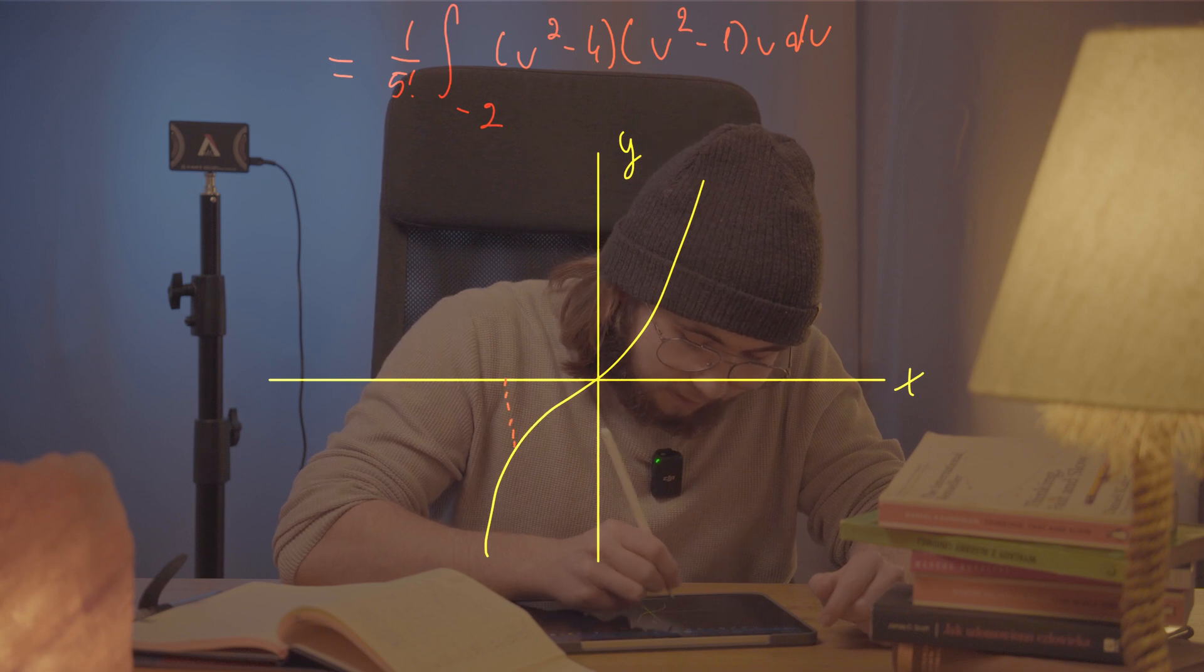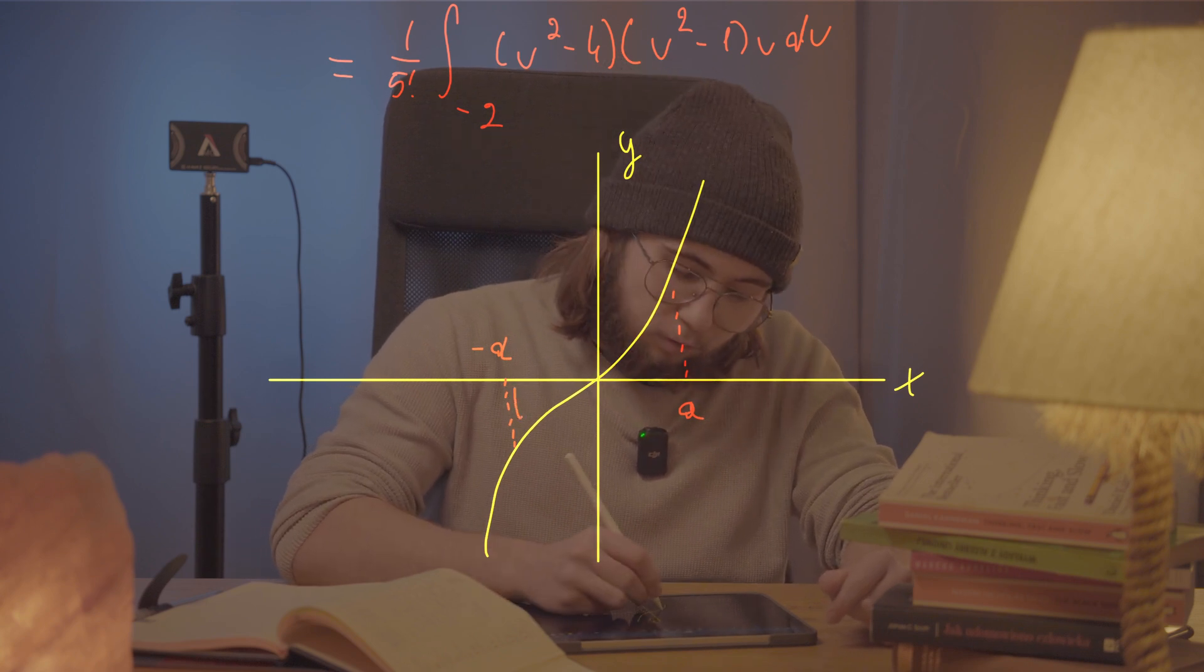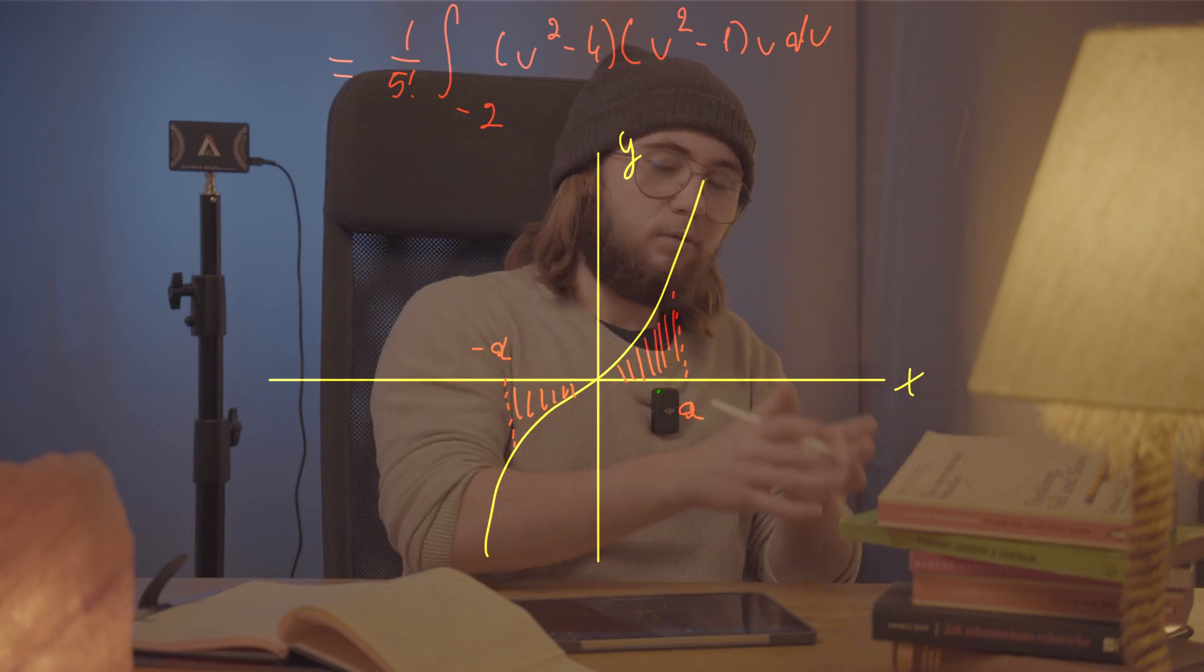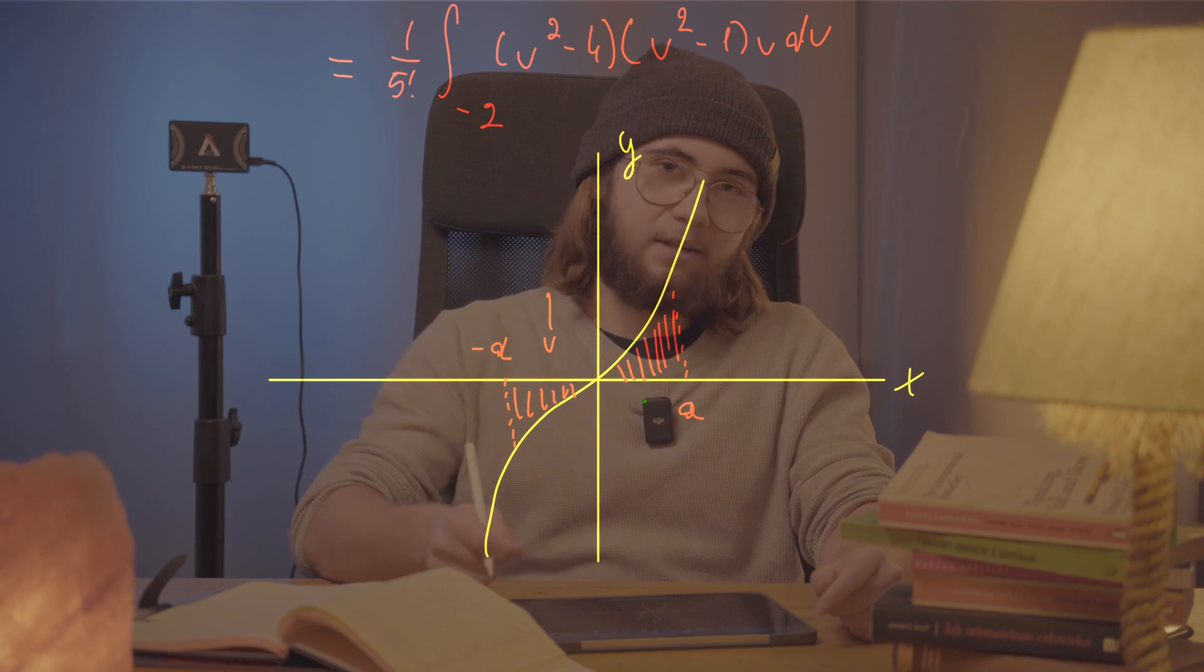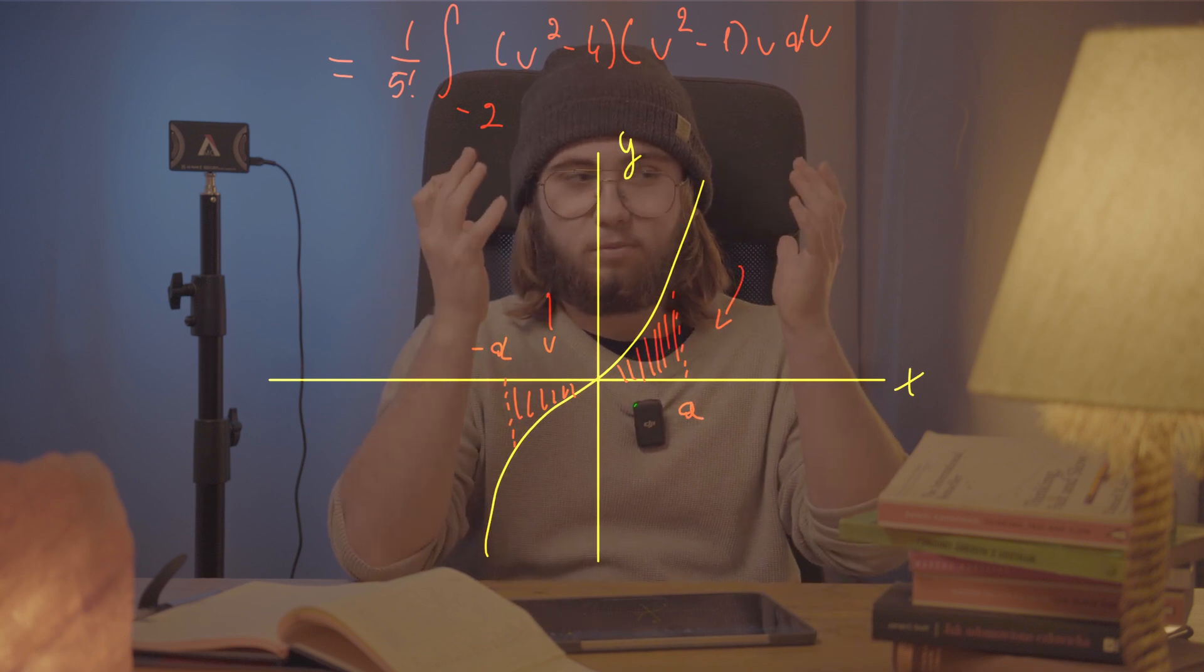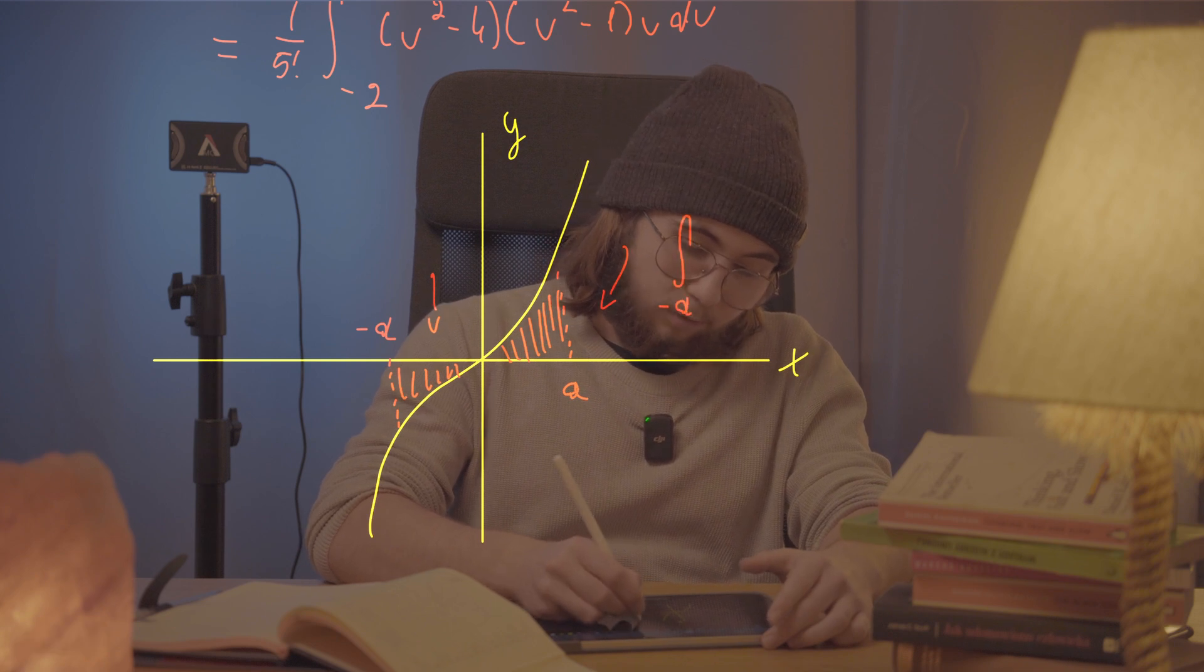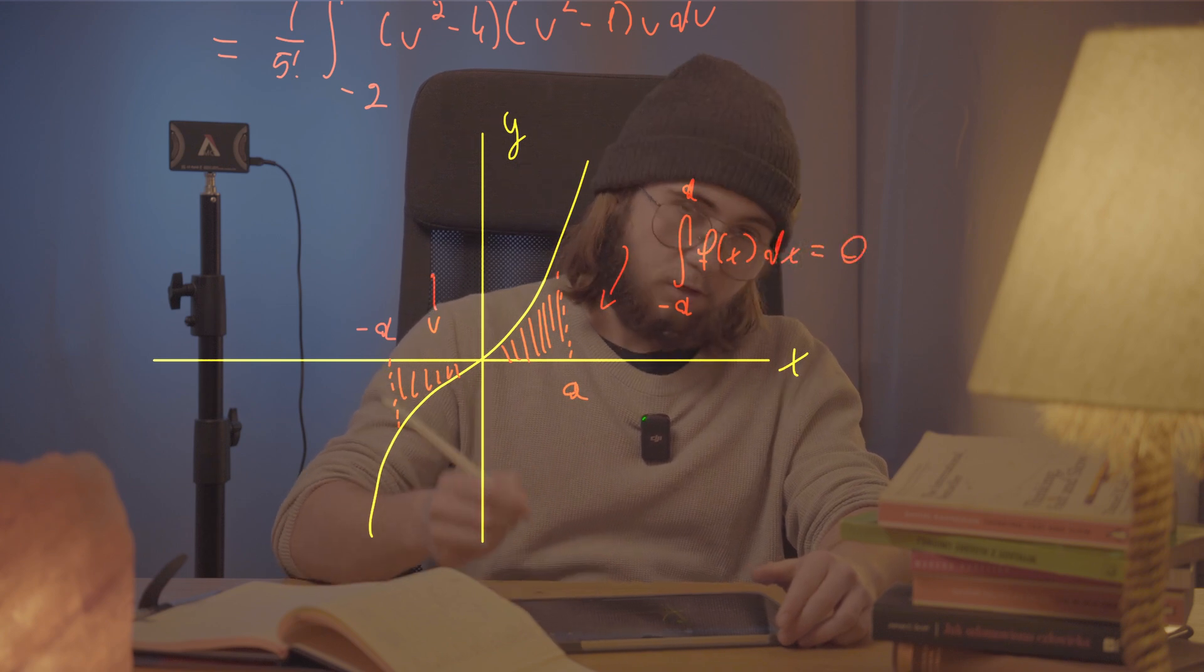You'll see that those two areas from negative a up to zero and zero up to a, the positive a, those are gonna have the same value, those areas are gonna be the same, but with opposite signs. Because here, we're gonna have an area that's under the x-axis, whilst here, we're gonna have an area that is above the x-axis. And so, those two areas are gonna have, well, pretty much the same value, they're gonna have different signs. And so, when we add them together, this integral between negative a up to a of our odd function f of x is gonna be equal to zero, because those are gonna cancel each other out.